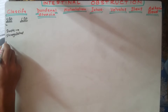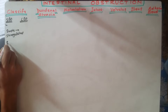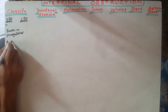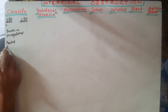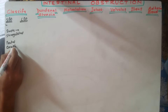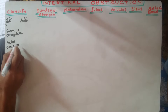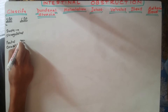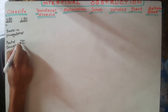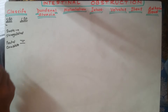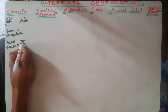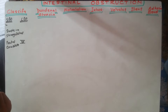The obstruction can either be complete or partial. Suppose this is the lumen and the lumen is partially obstructed — that is the partial type. Whereas if complete obstruction is present, it will be called a complete obstruction.